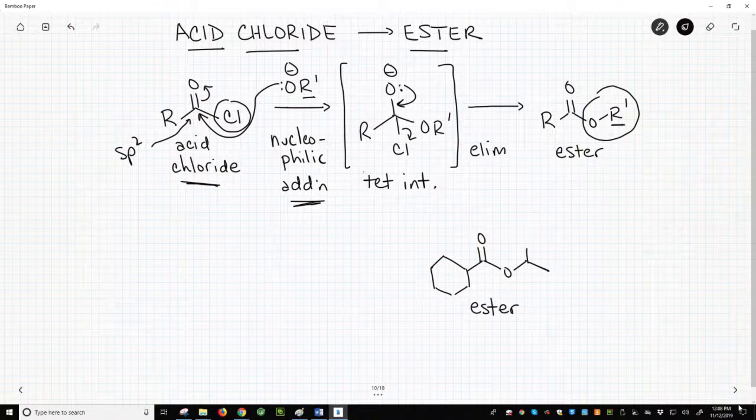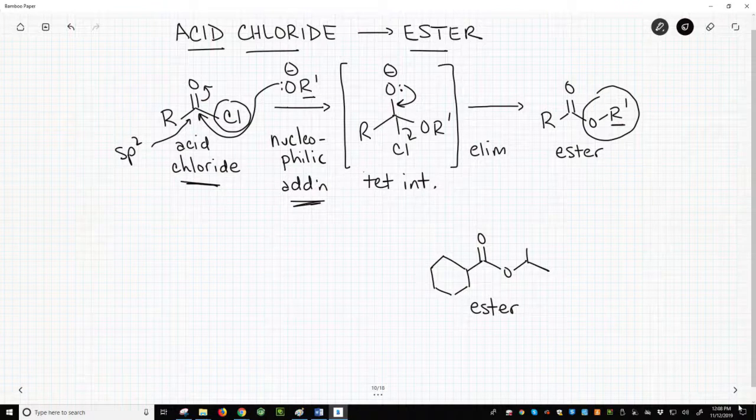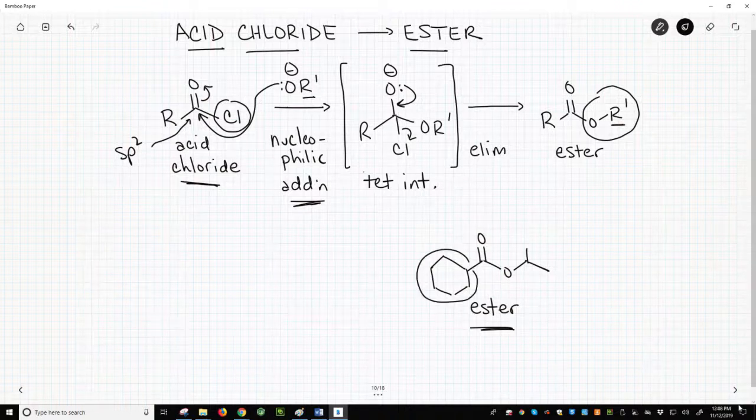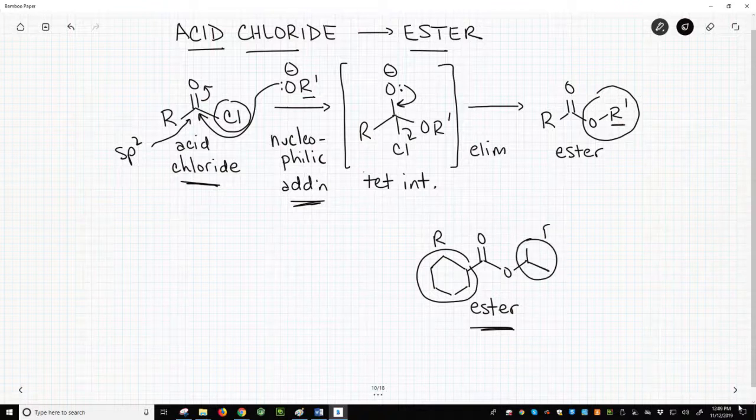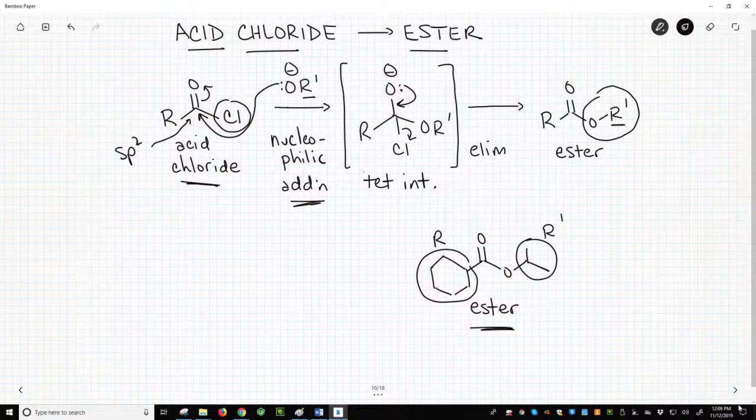To finish, let's do one sample reaction of an ester synthesis. Let's say we want to make the molecule in the lower right, this ester. Let's label our R and R' groups. R is cyclohexyl. R' is isopropyl. How do we do this?